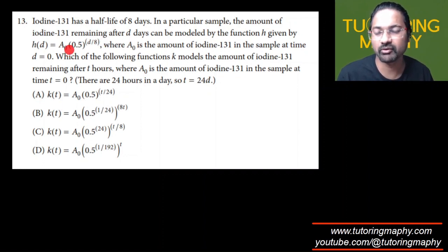So this is the amount of iodine which is left, where A₀ is the amount of iodine in the sample at t equal to zero. So A₀ is the iodine sample with which they started, the amount.